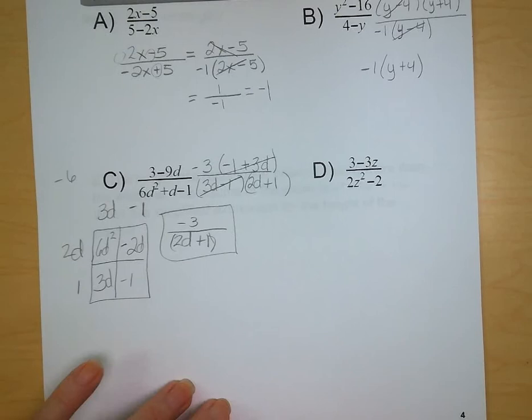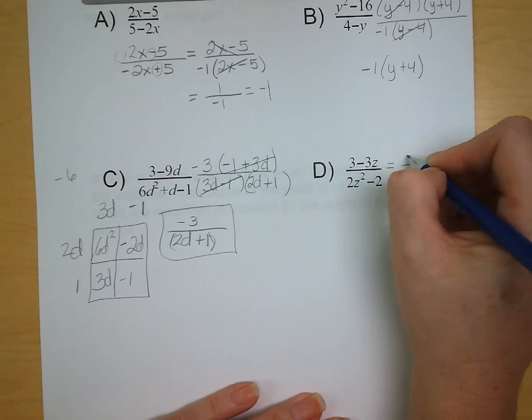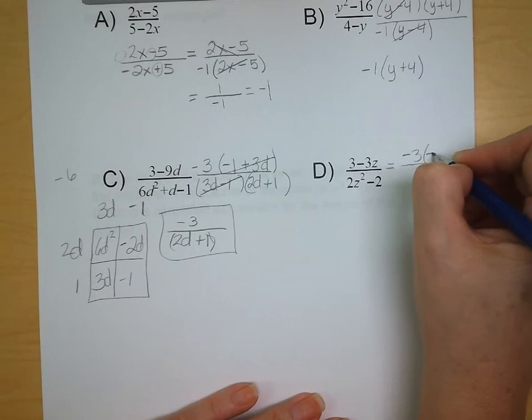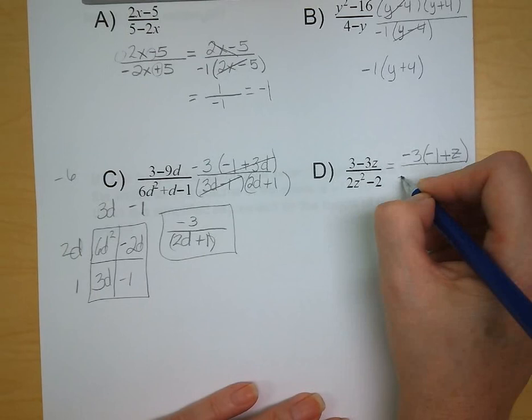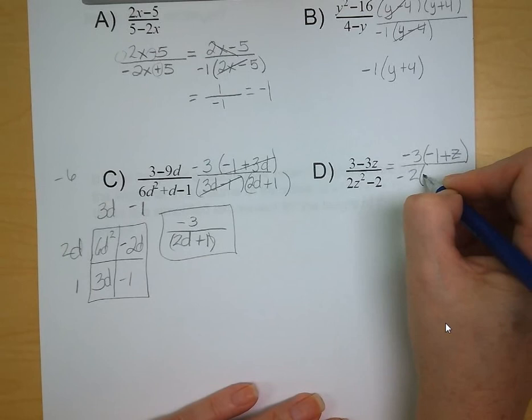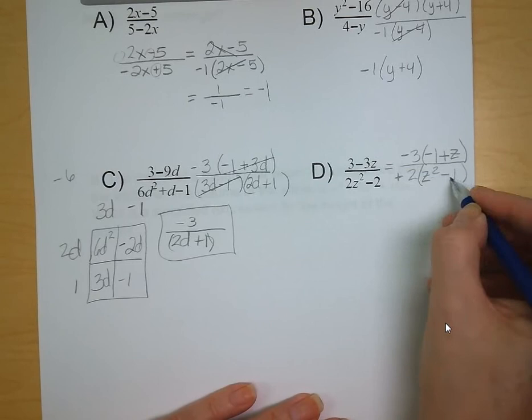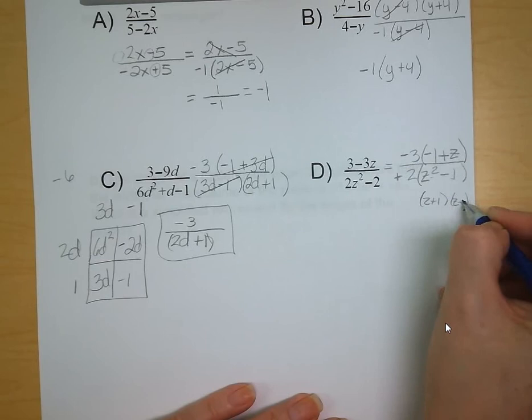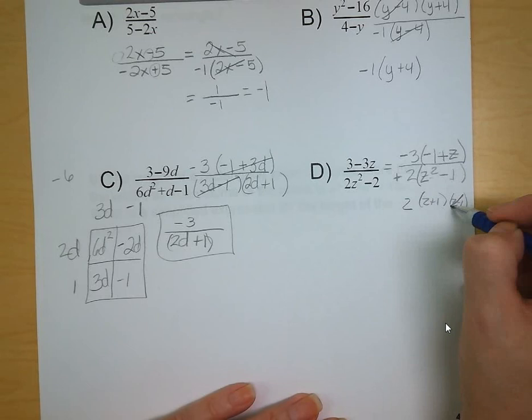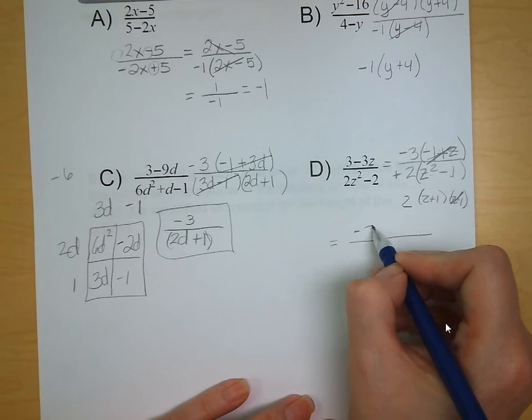Letter D: we have 3 minus 3z, so we can factor out a negative 3, leaving negative 1 plus z. The denominator we can factor out a 2, leaving z squared minus 1. That looks like a difference of squares, giving us z minus 1 and z plus 1, with the 2 on the outside. The z plus 1 and negative 1 plus z terms cancel, and we're left with negative 3 over 2 times the quantity z minus 1.